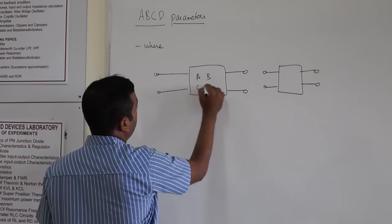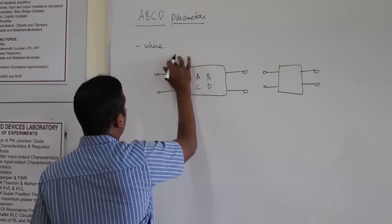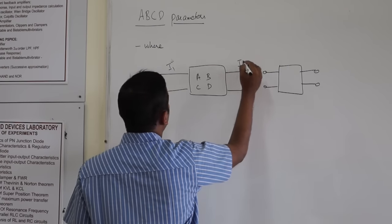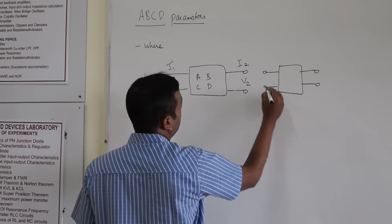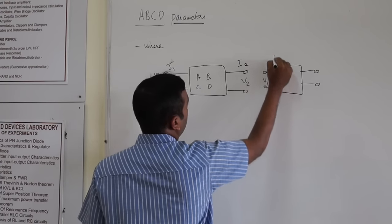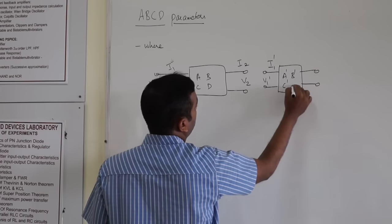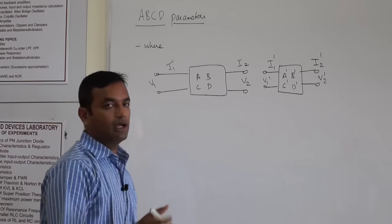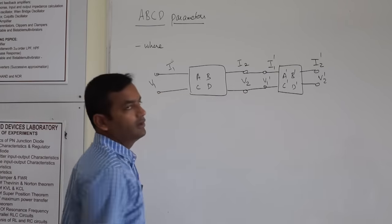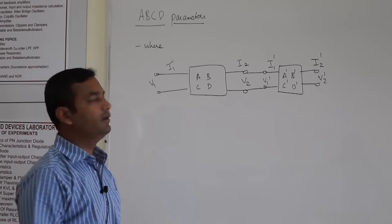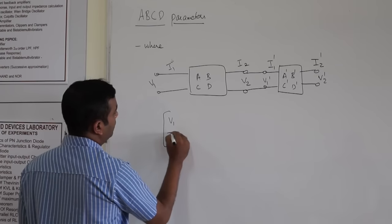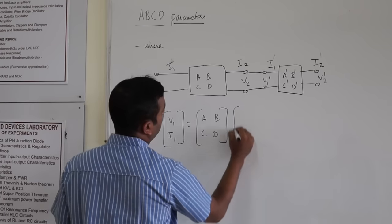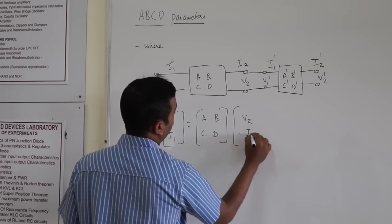Let us call the ABCD parameter of the first network with ports labeled I1, V1, V2, and I2. The second network will have V1 dash, I1 dash, A dash, B dash, C dash, D dash, and I2 dash and V2 dash. This is how we write ABCD parameters: V1 and I1 equals ABCD times V2 and minus I2.